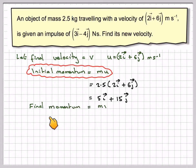The final momentum will be mv, so that will be 2.5 times v, and v is what we need to find.